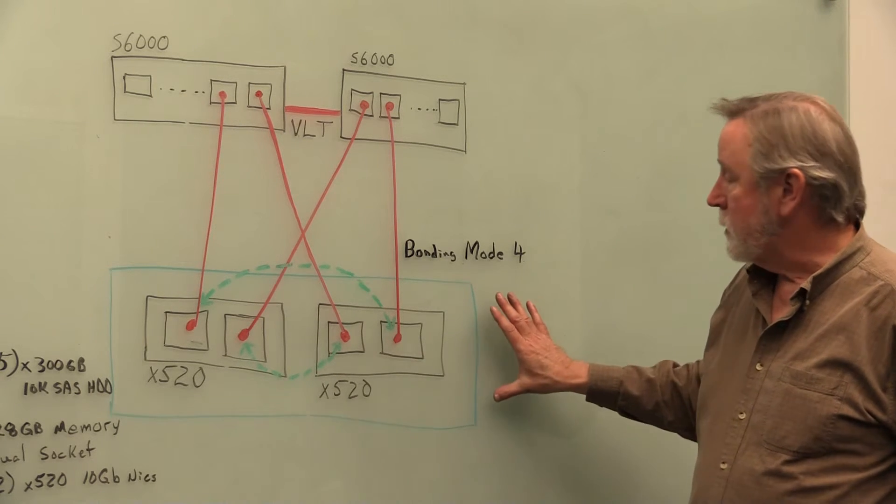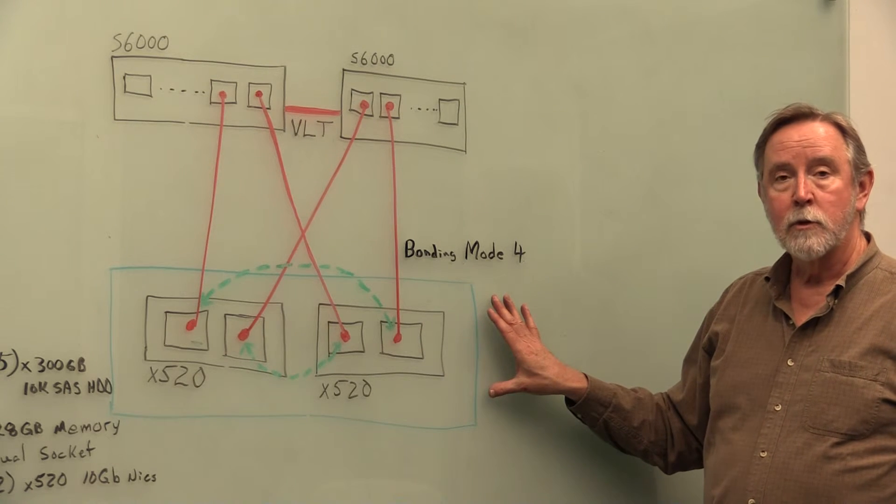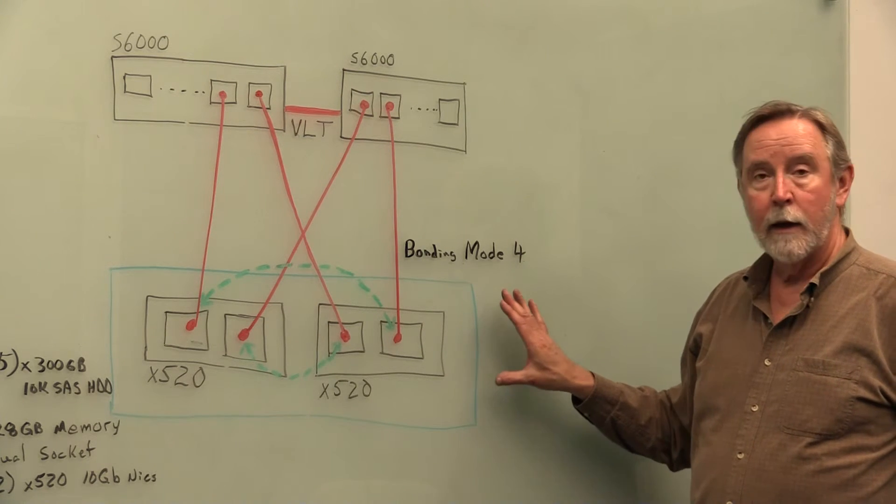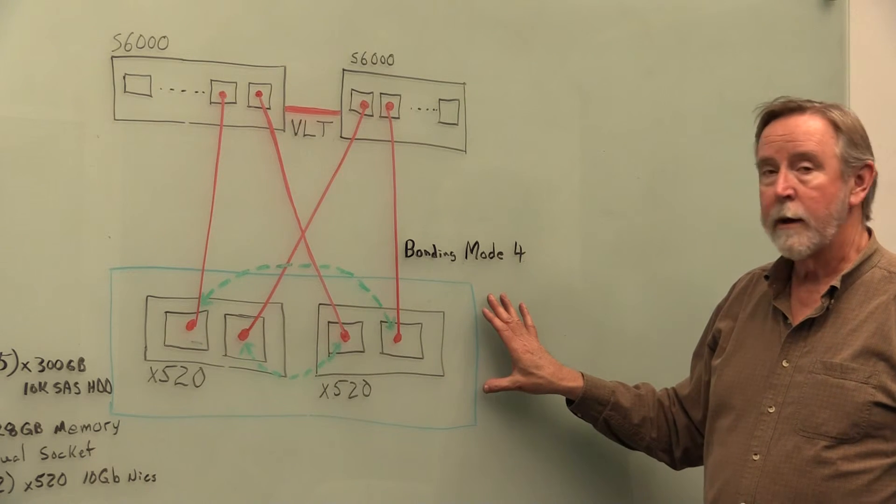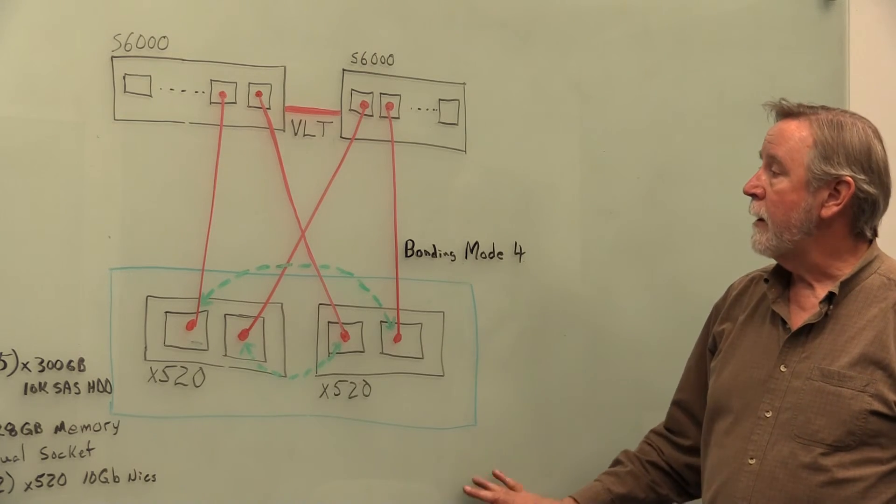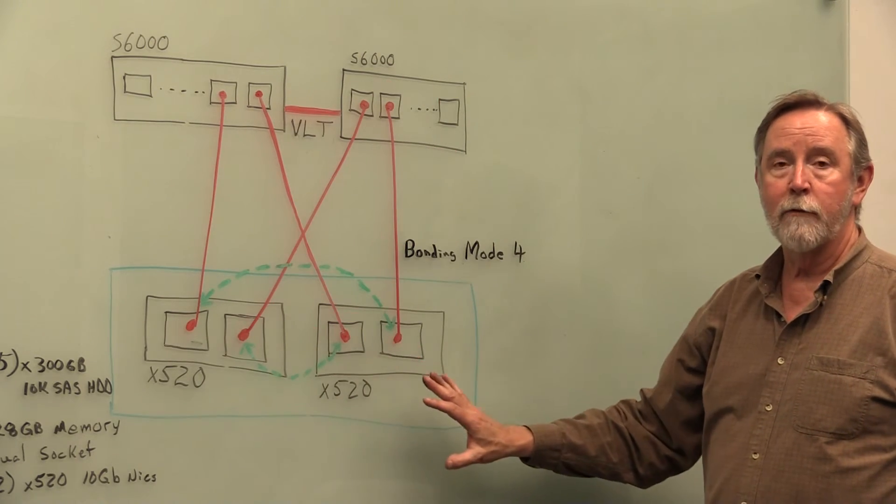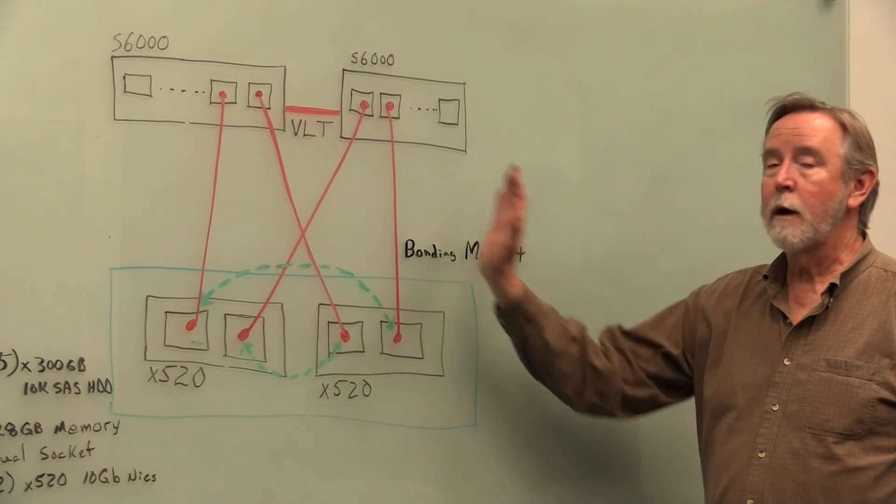So we've got two of these set up. We've got one that runs the head node that runs the Joyent Triton services and is also an administration portal into the Joyent platform, Triton platform. And the other one, which would just be duplicated down here and has exactly the same networking configuration, is our compute node. So that's basically our hardware configuration.